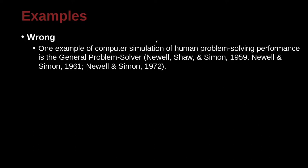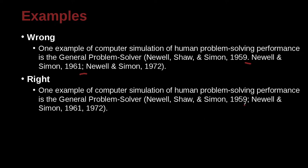One example of computer simulation of human problem-solving performance is the general problem solver (Newell, Scholl, and Simon, 1959; Newell and Simon, 1961, semicolon Newell and Simon). Right away you can see there's a problem — here using a period and here using a semicolon. Remember the correct way to combine different authors' different papers is to use the semicolon. And remember if you have the same authors twice, you don't need to write their names — just write the different dates of the paper, separated by a comma.